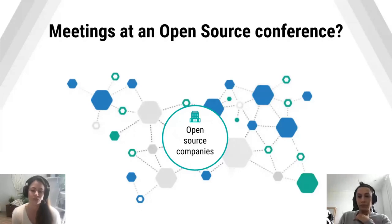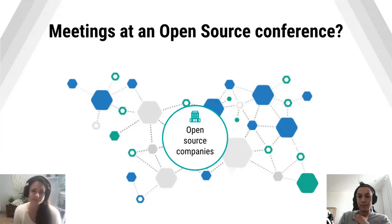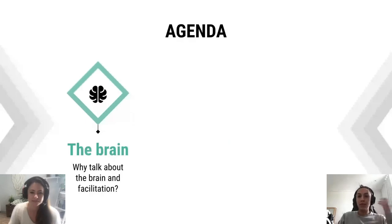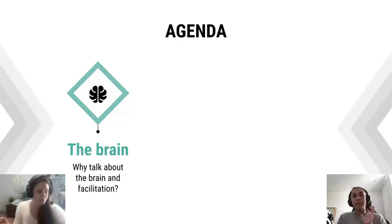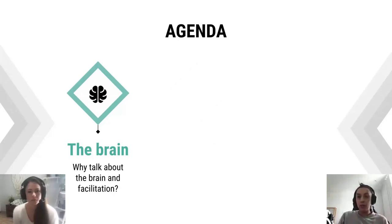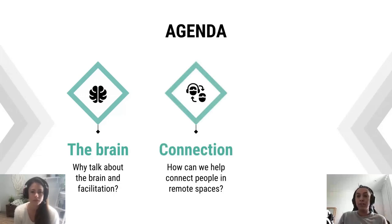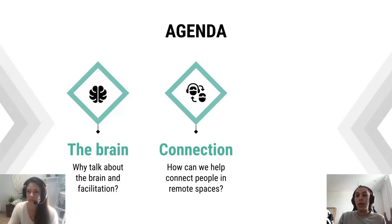Our target audience for today's talk is anyone working for an open source company looking for ways to bring people together in more effective, human ways. We're hoping you'll leave with some new ideas and inspiration. What can you expect? First we'll look at the brain and how it relates to remote meetings, and give a brief introduction to facilitation. Then we'll move to our first principle — creating connection — where we'll share both the principle and practical methods you can take away and use.